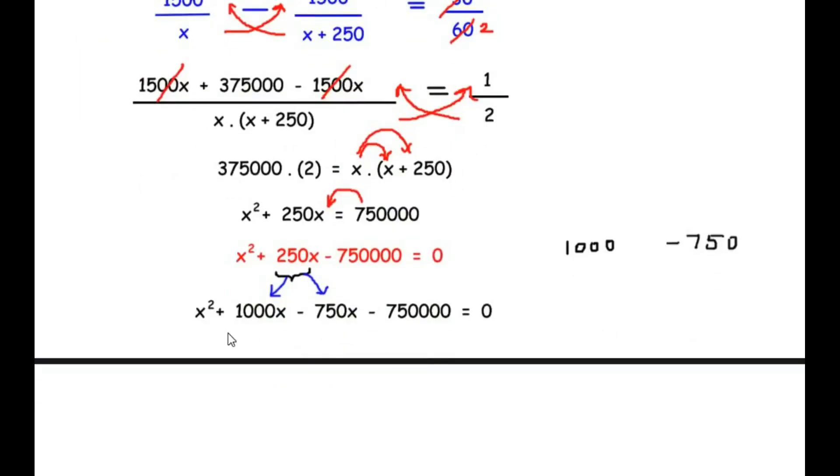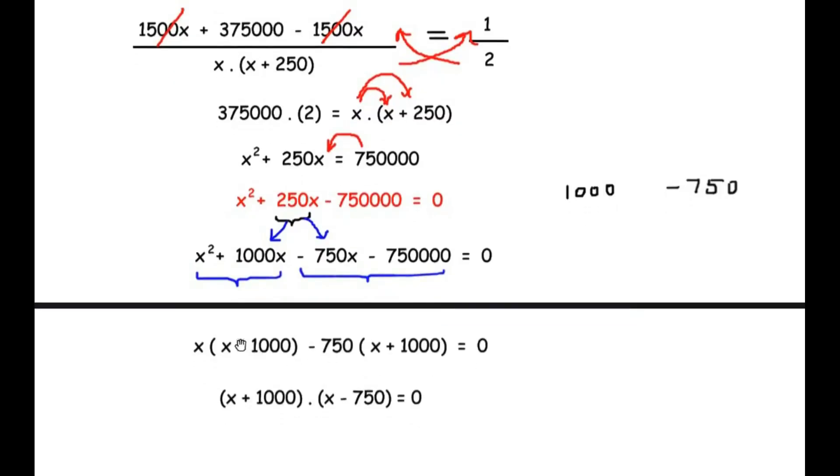Now further factorizing this, let us group the first two terms and the last two terms. So from the first two terms x is a common term and from the last two terms minus 750 is a common term. So we write x times x plus 1000 minus 750 in the bracket x plus 1000 is equal to 0. Now x plus 1000 is a common term, so we are going to pull it out as a common factor and x minus 750 becomes our second factor and these two factors are equal to 0.